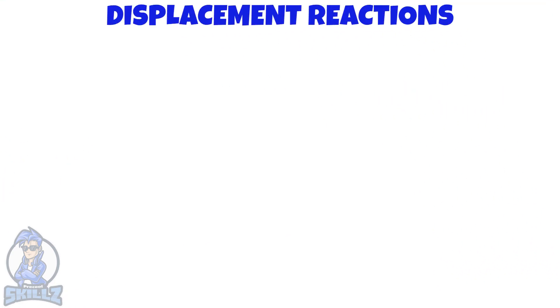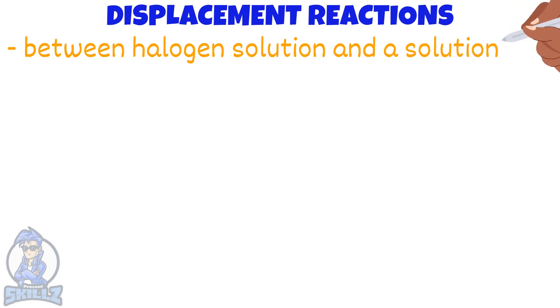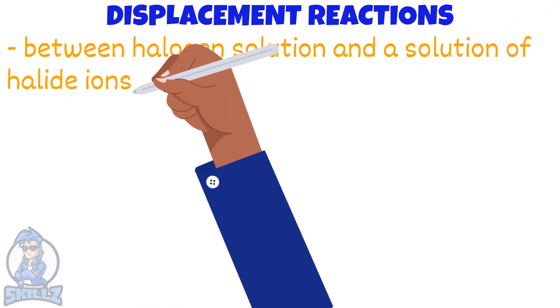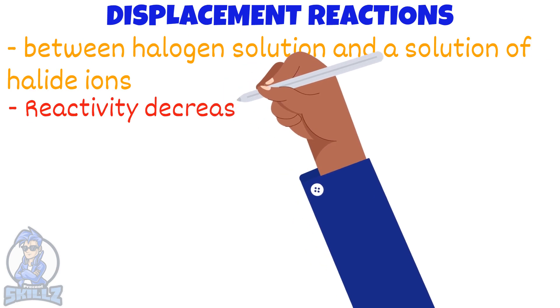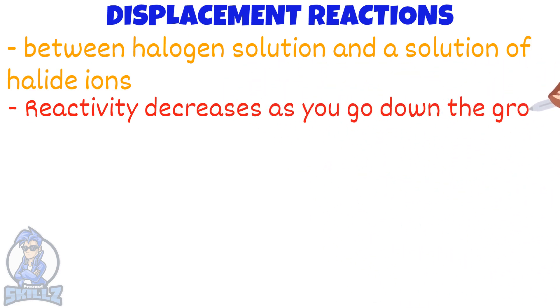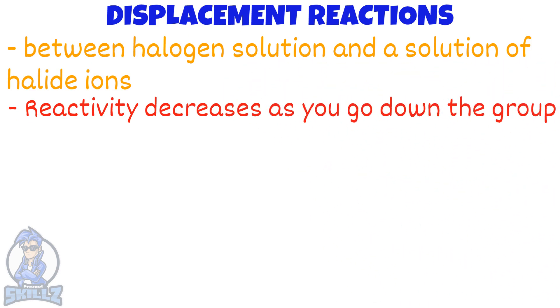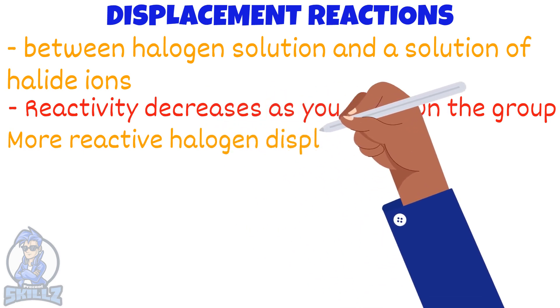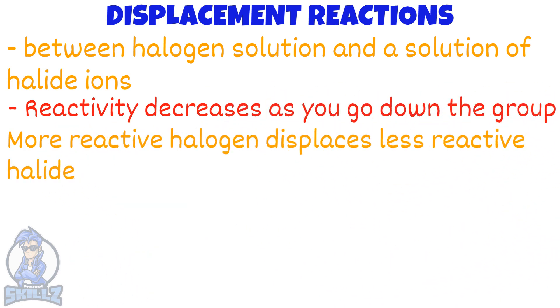Now we are going to take a look at displacement reactions between a halogen solution and a solution with halide ions. Earlier I mentioned that the reactivity of halogens decreases as you go down the group. So when a more reactive halogen is added to a solution of a less reactive halide, the halide is displaced to form a halogen.